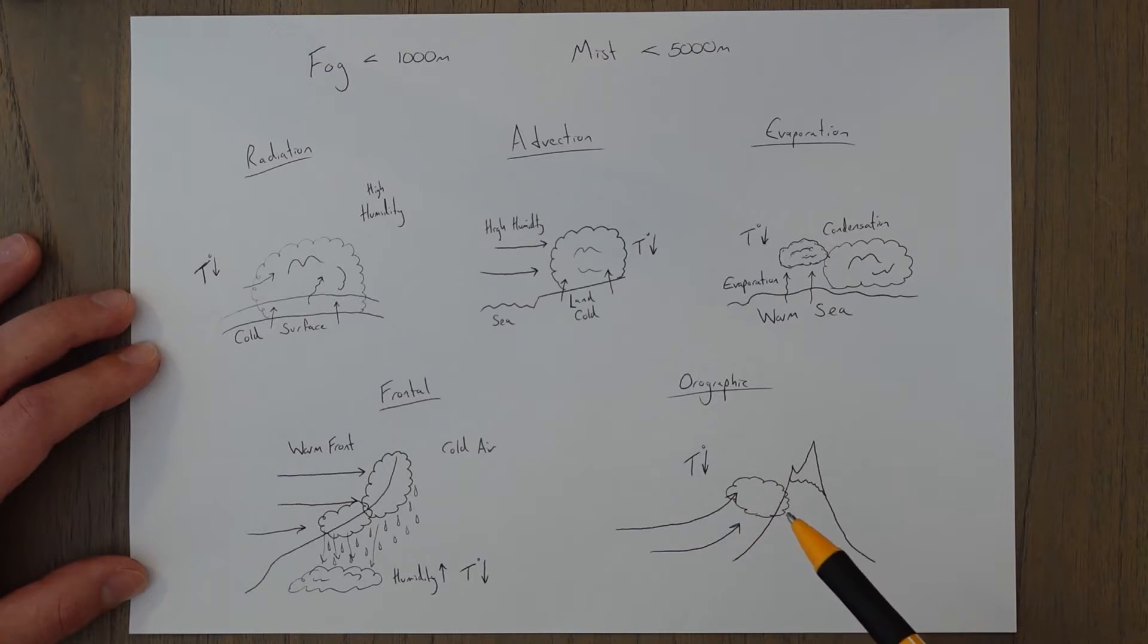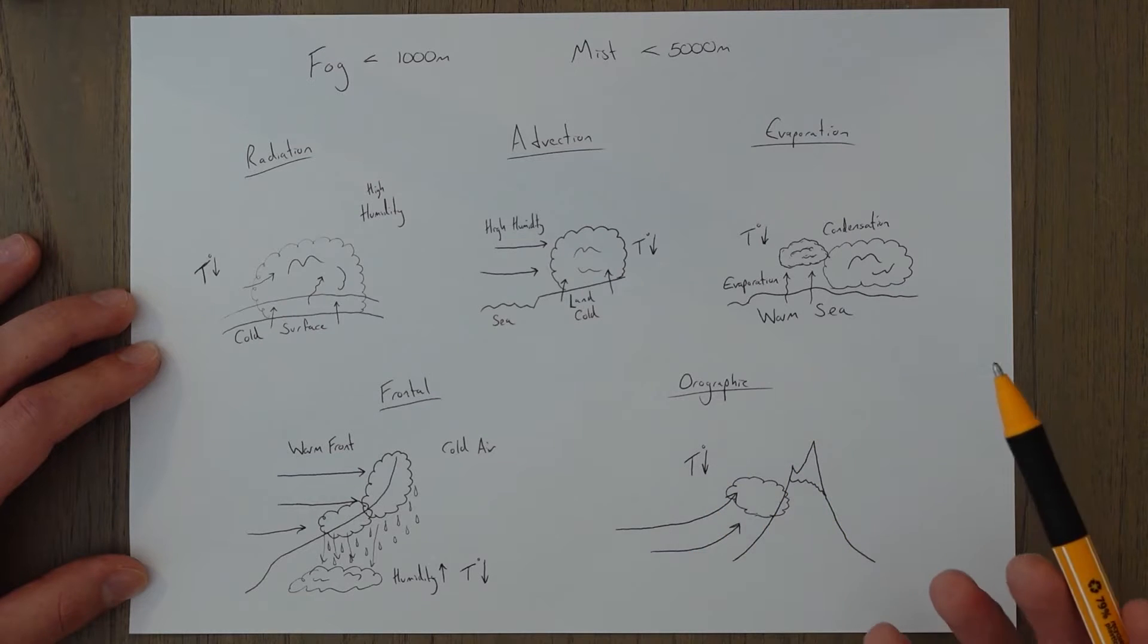Orographic fog is caused by the air being forced to rise. If a mountain gets in the way of humid air blowing in, it forces the air to rise, and as it does this it cools adiabatically, and if it cools to below the dew point temperature the moisture condenses out to form fog. It's kind of just like clouds, but because the land rises with the rising air, it's considered surface level so it's fog.